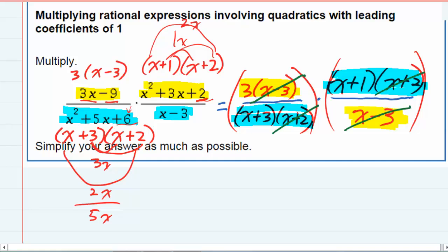So doing that cross canceling has simplified everything enough so that when I multiply in the top, I will have the 3 times the (x plus 1). That's all that's left.